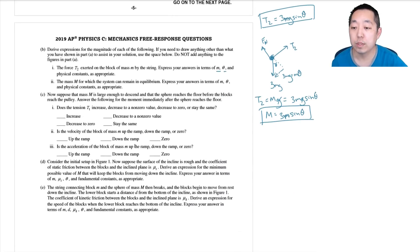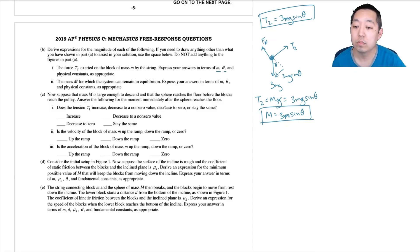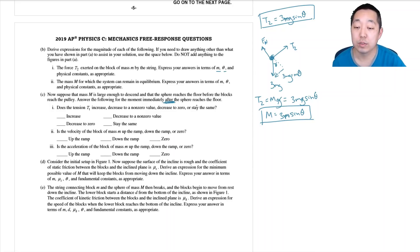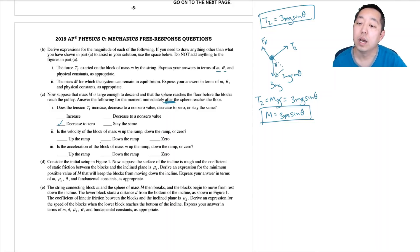Now suppose mass M is large enough that the sphere descends and reaches the floor before the blocks reach the pulley. For the moment immediately after the sphere reaches the floor: does tension T2 increase, decrease to a non-zero value, or decrease to zero? It decreases to zero, because once the sphere is on the ground, the normal force does all the work.